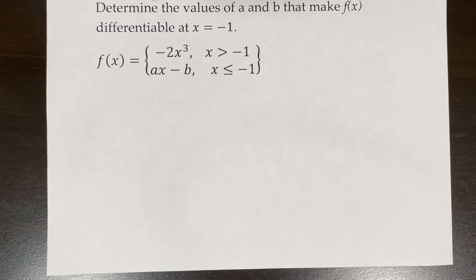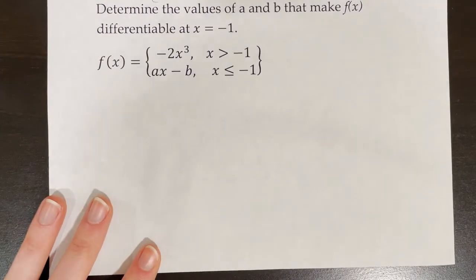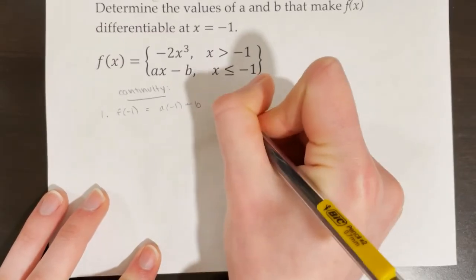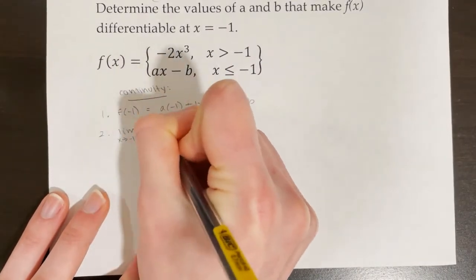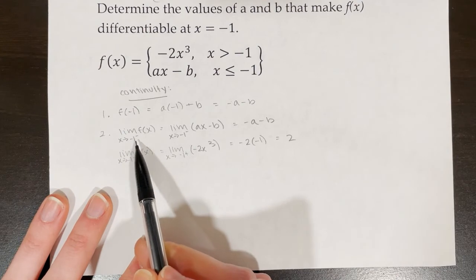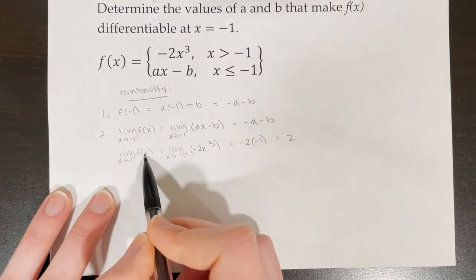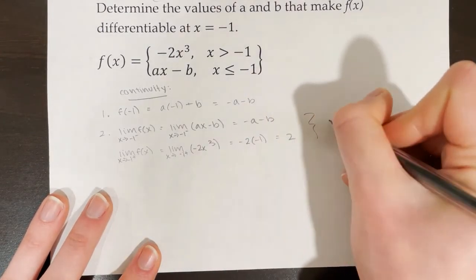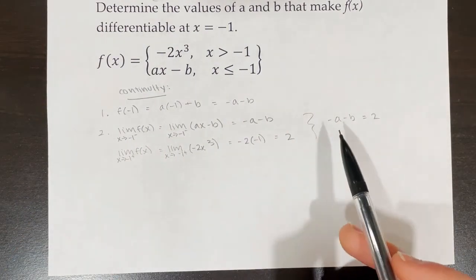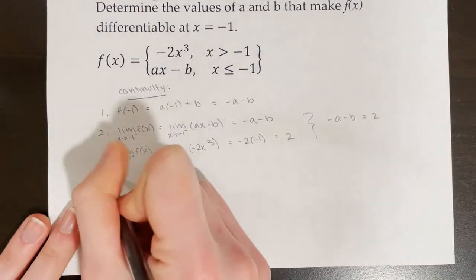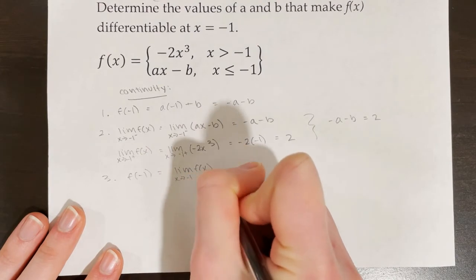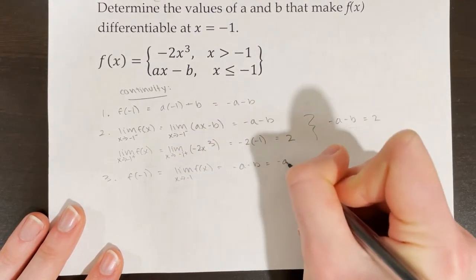Determine the values of a and b that make f of x differentiable at x equals negative 1. First step is to go through our definition of continuity. f of negative 1 equals a times negative 1 minus b, or negative a minus b. The limit of f of x as x approaches negative 1 from the left equals negative a minus b, and the limit from the right is 2. So negative a minus b must equal 2, and f of negative 1 must equal the limit, giving negative a minus b equals 2.